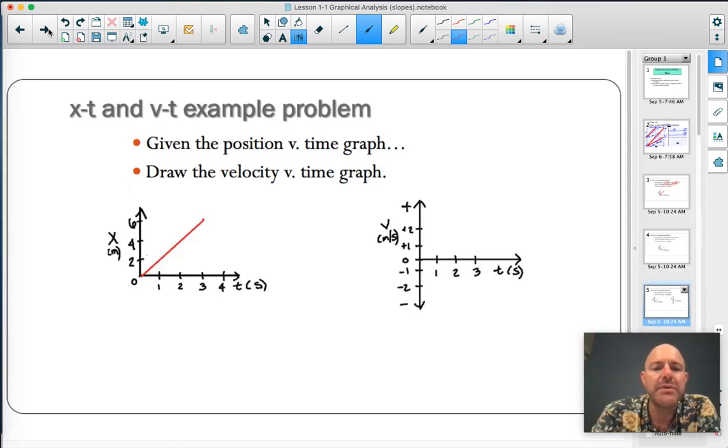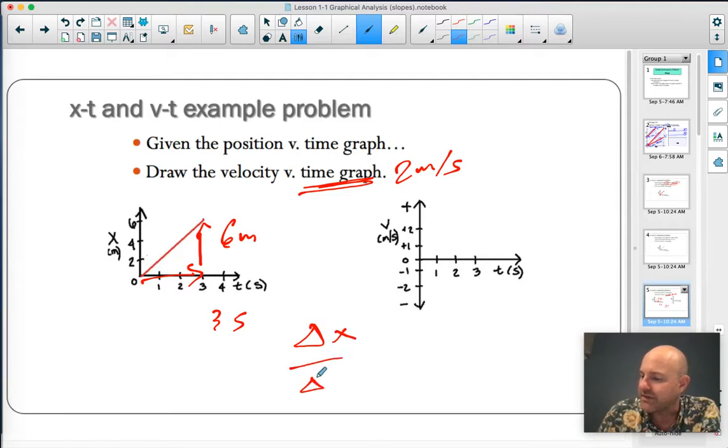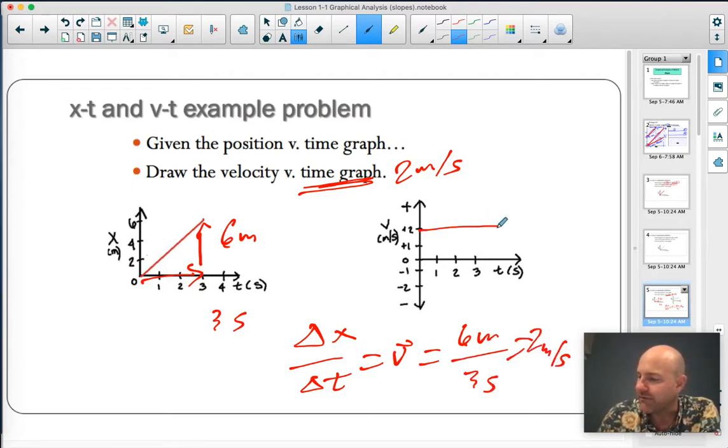The next thing we might do is look at this and say, well, if we have this position-time graph, what does the velocity-time graph look like? We actually kind of know here, because we were already told he's traveling at a steady 2 meters per second. But if we didn't know that, we could take the rise of this graph, which is 6 meters, and the run of it, which is 3 seconds, and say, well, delta x over delta t is equal to my velocity, which is equal to 6 meters over 3 seconds, or 2 meters per second. And so, that would look something like that.